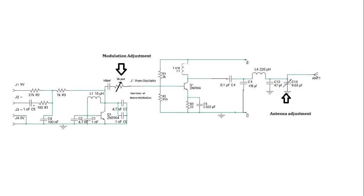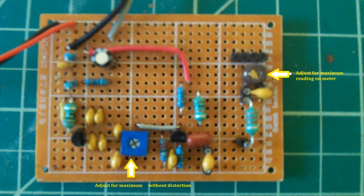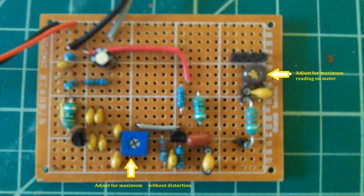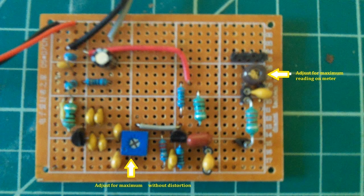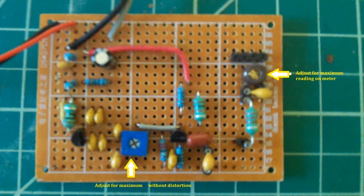So once everything is set up, there's two adjustments you're going to be making. On the schematic here, you can see there's a modulation adjustment and the antenna adjustment. On the perfboard, they're here and here. You want to adjust the antenna to get your maximum reading on your voltmeter.